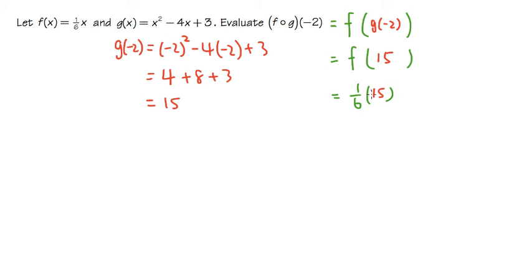Well, this is the same as 15 over 6. And now, of course, we can reduce this fraction. We can divide the top by 3. So we have 5 on the top. And then we can divide the bottom by 3. So we have 2 on the bottom. Therefore, the answer is 5 over 2. And that's it.